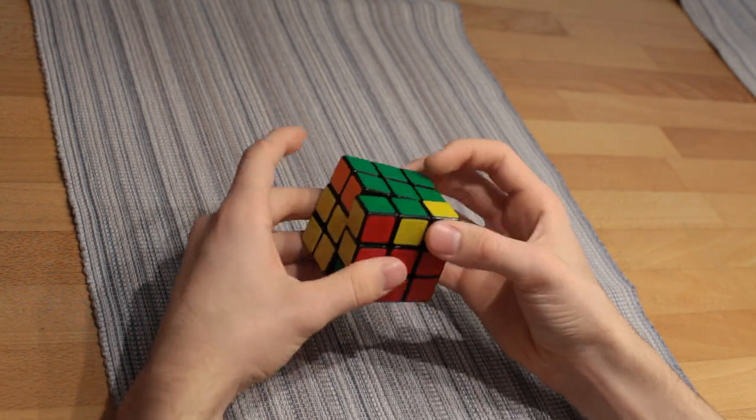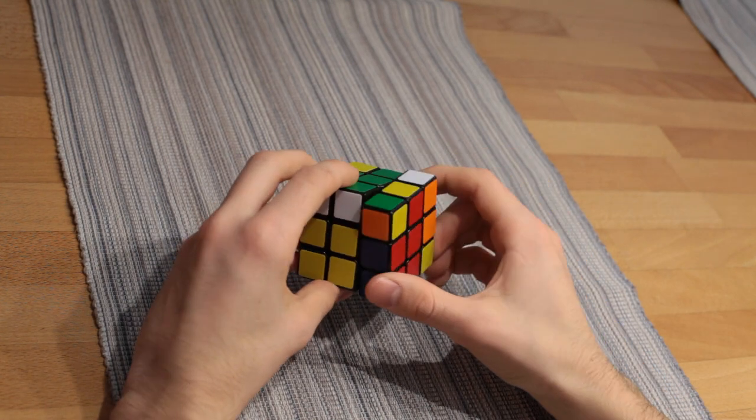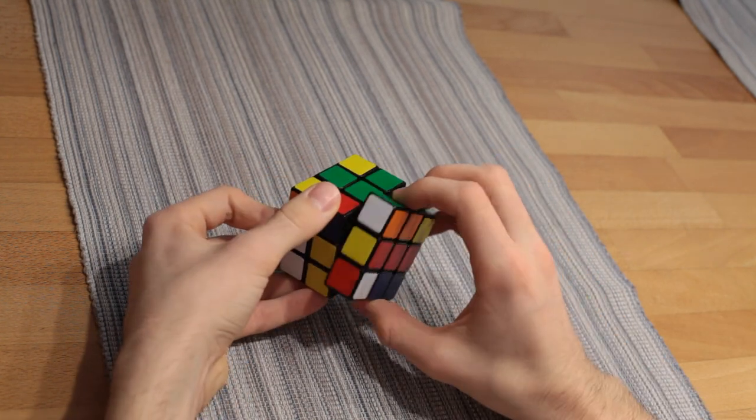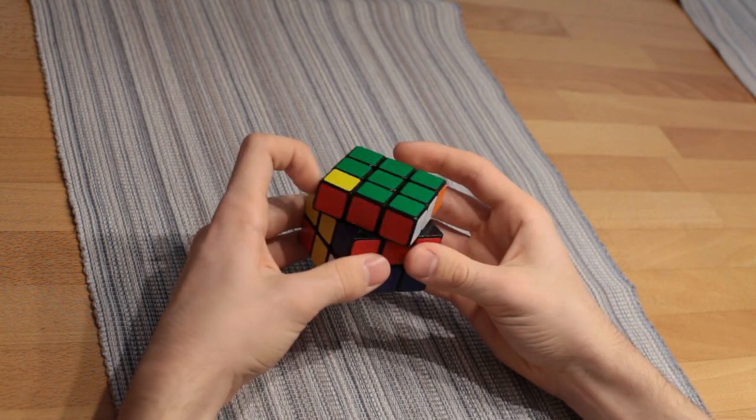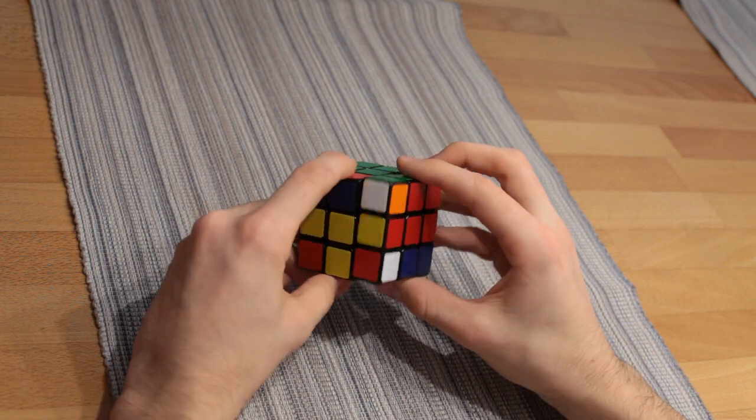As you see, I am exchanging three corner pieces and will exchange three edge pieces by doing an algorithm forwards and backwards.